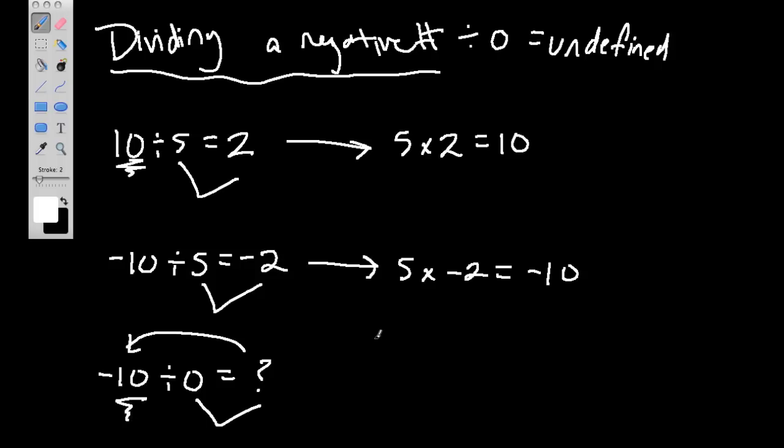0 times 1 is 0, 0 times 0 is 0, 0 times negative 1 is 0. Anything times 0 is 0. So there's no number I can multiply by 0 to equal negative 10. You can't divide by 0.